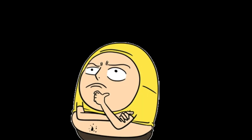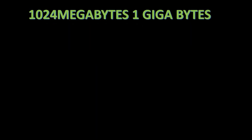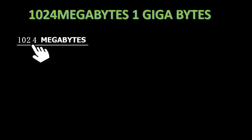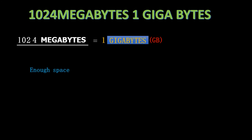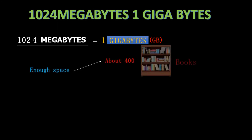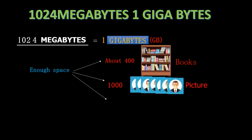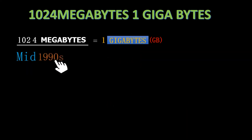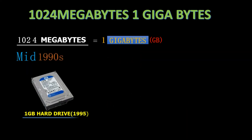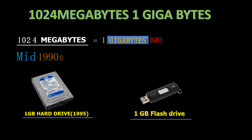Now you are probably wondering: what is it called if you have 1,024 megabytes? Yes — 1,024 megabytes is called a gigabyte. 1 gigabyte is enough space to hold about 400 large books, or 1,000 photos, or 16 hours of music. By the mid-1990s you could buy hard drives, and today you can buy a 1 gigabyte flash drive.